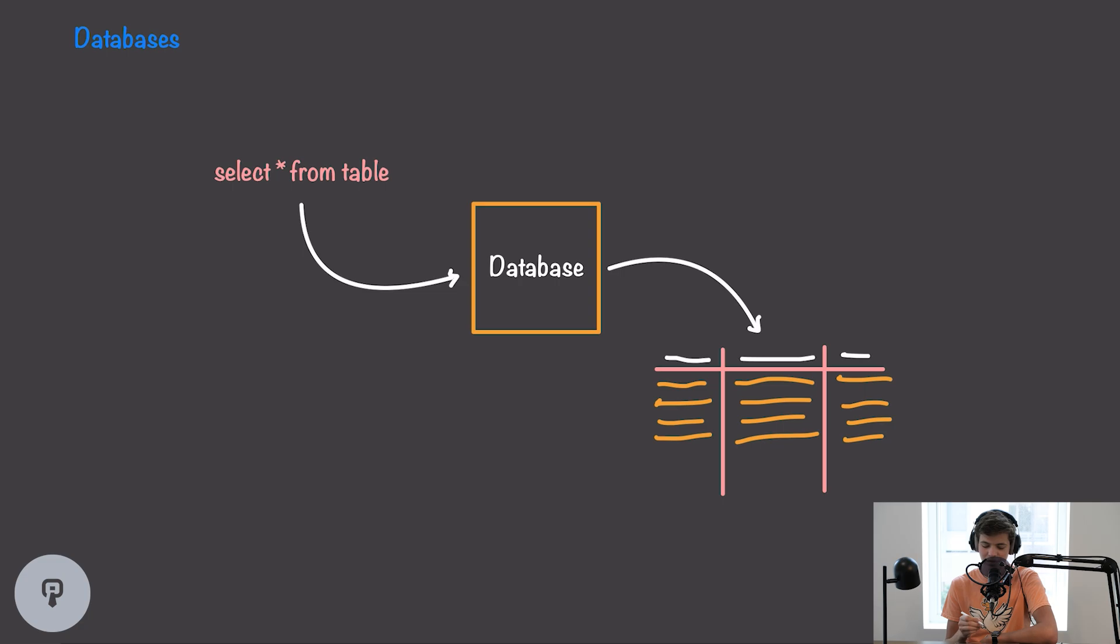So at its most basic level, a database is just something that takes in a query, which is going to be some statement, usually written in SQL, that tells the database what you want to get out of it. And then the database is going to do something in the backend, and it's going to figure out how to actually get that data and return to you some results. And those results are usually going to look like a table where you have rows and columns of data.